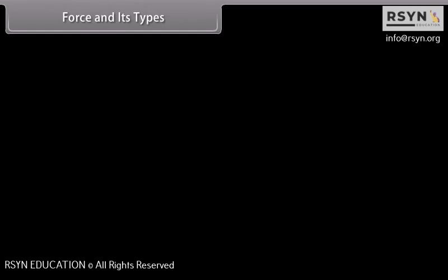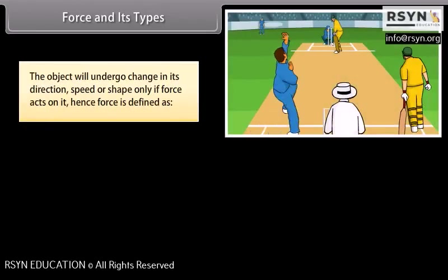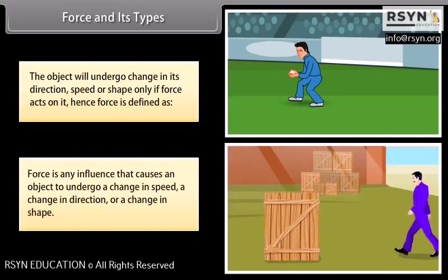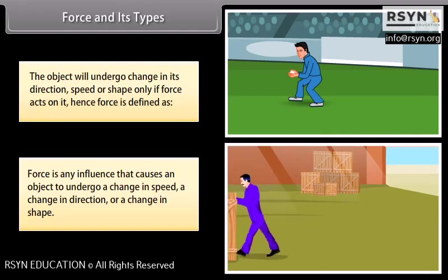Force and its types. The object will undergo change in its direction, speed or shape only if force acts on it. Hence, force is defined as any influence that causes an object to undergo a change in speed, a change in direction, or a change in shape.